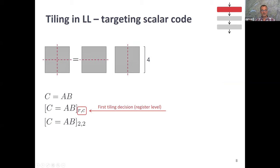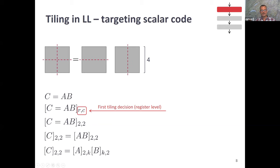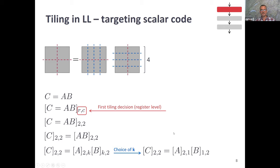Let's walk briefly through how tiling works. Everything must be done automatically, so we formalize it rigorously. Here's a simple example: multiplying two small matrices. We start by tiling — assigning tile size R and C to the entire computation. Then we propagate the tiling decisions inside, and an interesting thing happens: we get new degrees of freedom. Starting with tile size two-by-two, as we distribute over A times B, the K dimension becomes an additional free parameter used for auto-tuning by enumerating variants.